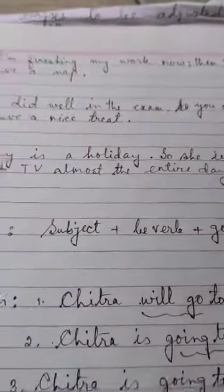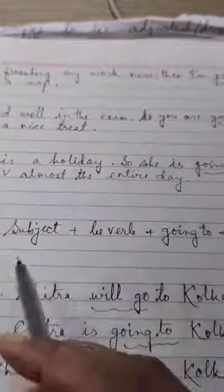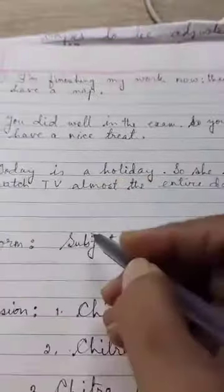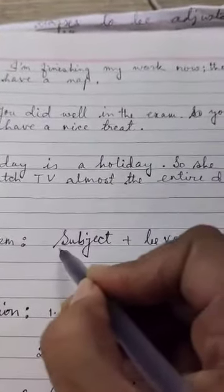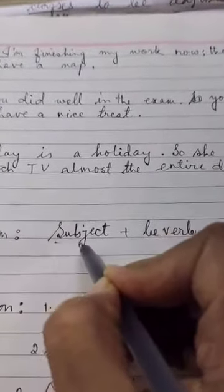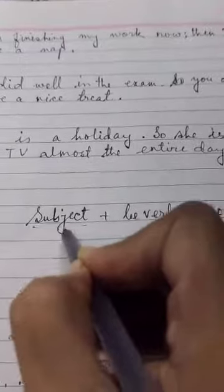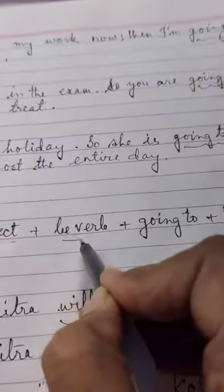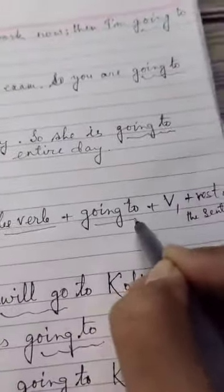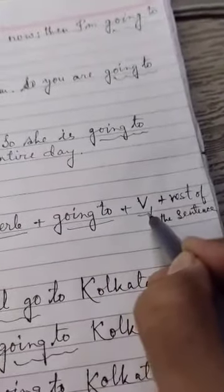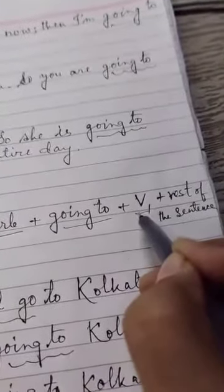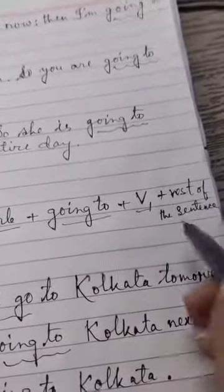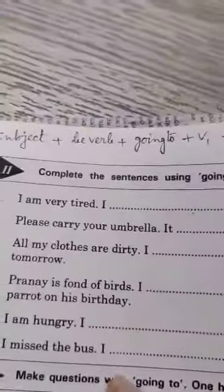Look here. I have written a format. At first, we will put the subject, then be verb, then going to, then V1 — means the first form of verb — and then the rest of the sentence.